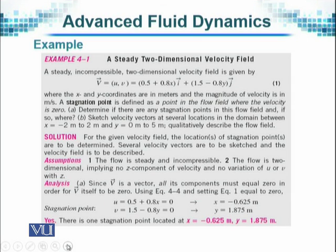We are considering a steady two-dimensional velocity field. That means it is not a three-dimensional motion, so we do not see the Z component or related to it, the K unit vector. A steady incompressible two-dimensional velocity field is given by V = (0.5 + 0.8X)i + (1.5 - 0.8Y)j, where the X and Y coordinates are in meters and the magnitude of the velocity is in meters per second.